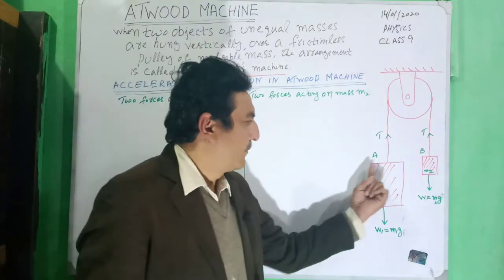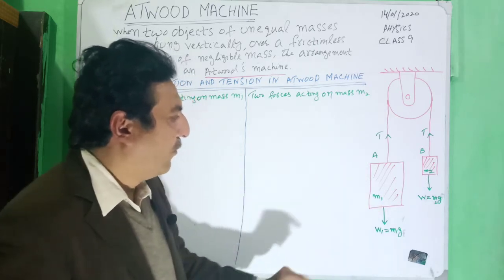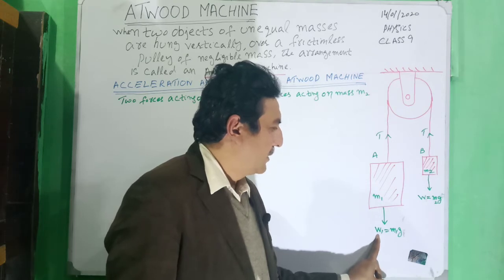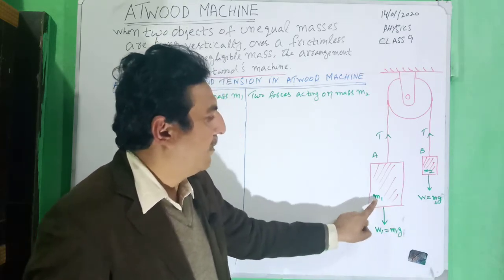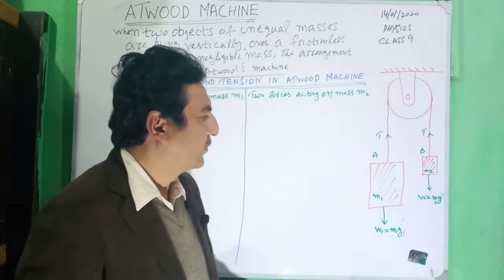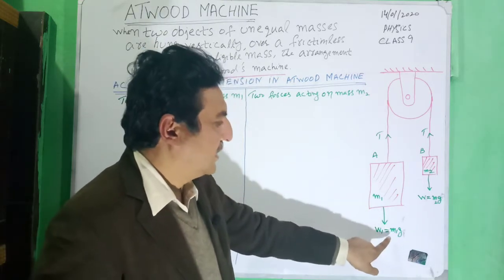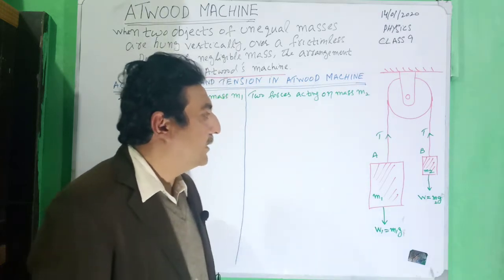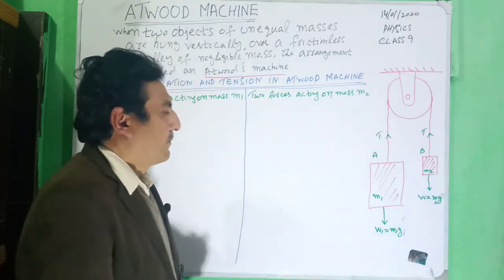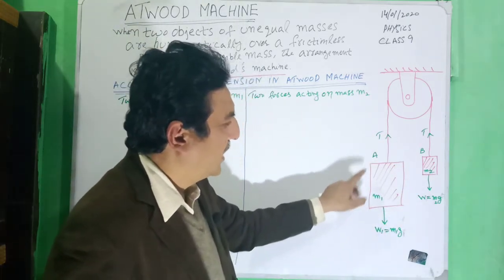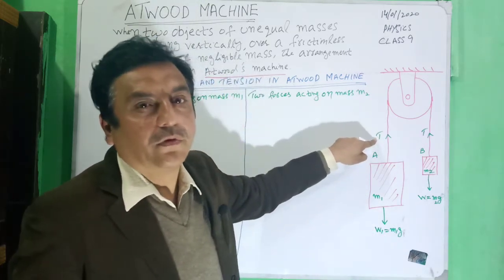First we look at this mass. There are two forces acting on body A, mass M1. One is weight — the weight of this body is W1, which is equal to M1·G because the mass of the object is M1. The other force is tension, which is an upward force. Now this body A is coming downward, so the weight force is greater and the tension force is smaller.